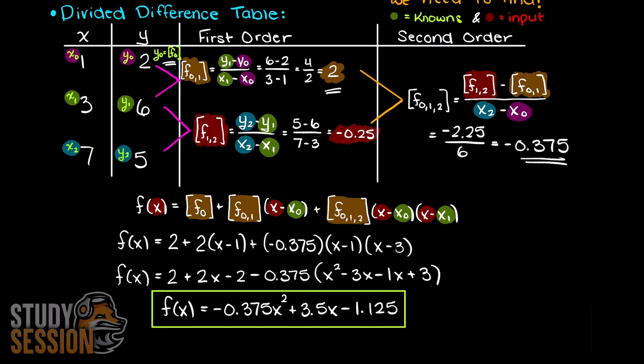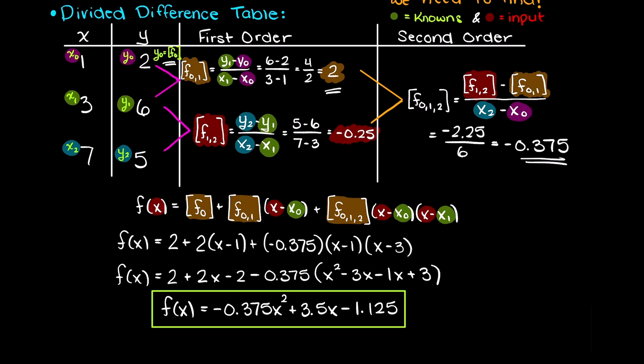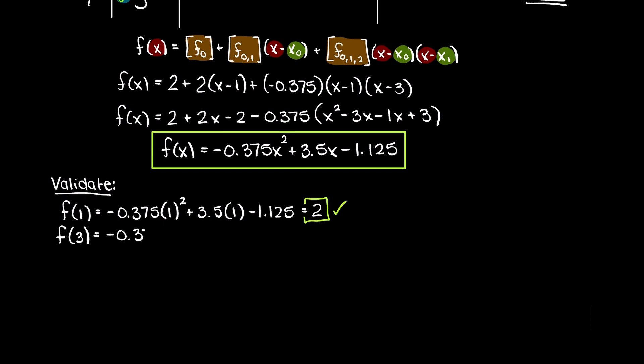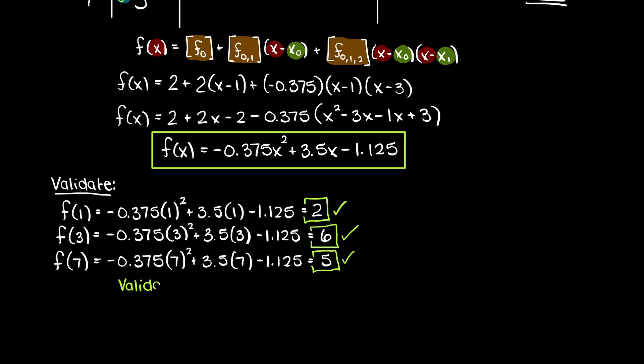We get Newton's interpolating polynomial of minus 0.375x squared plus 3.5x minus 1.125. This is the formula for the continuous polynomial function that fits our discrete data set. We can validate this function at our known data inputs, as this function will return our outputs if it is correct. As you can see our polynomial interpolating function is correct as it passes through all three of our nodes, or our data points.